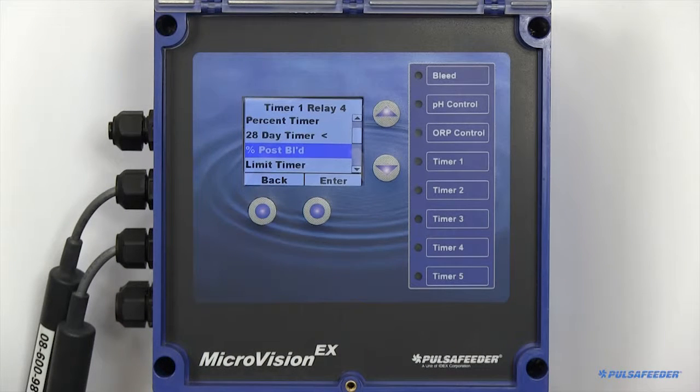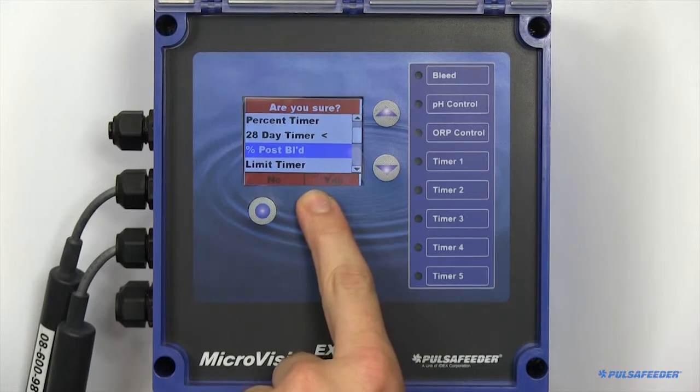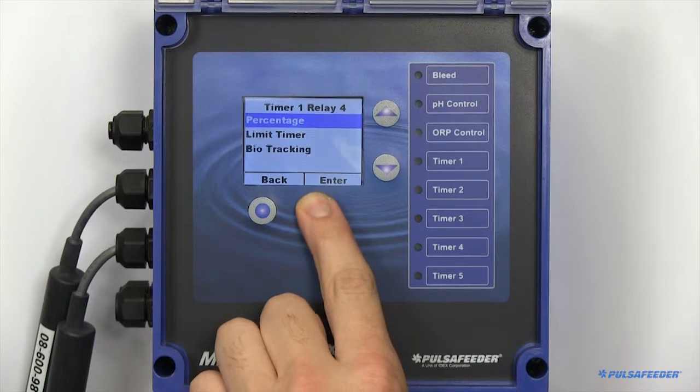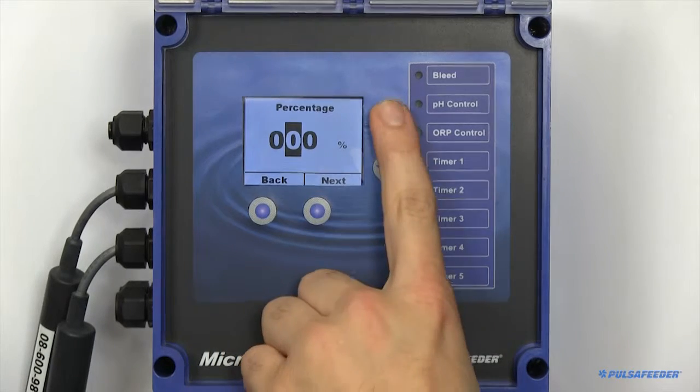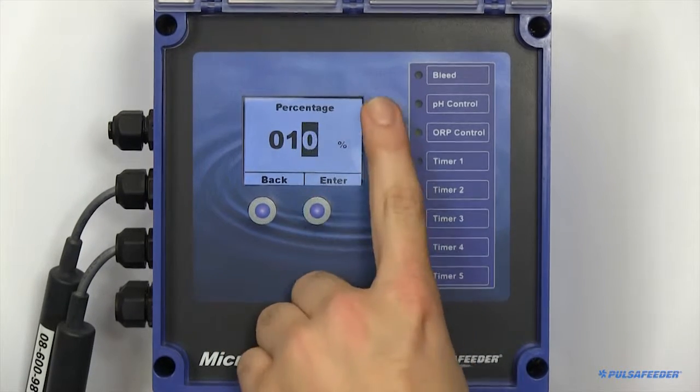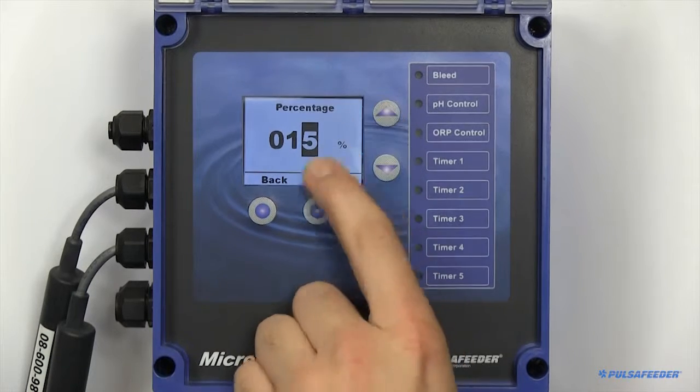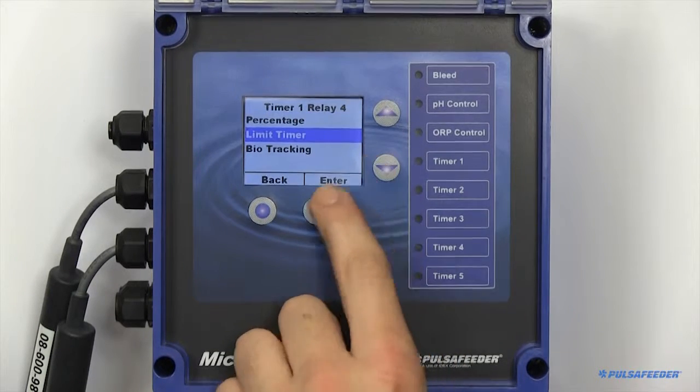Percent Post Bleed keeps track of the time the bleed relay is turned on. When that bleed shuts off, it will then bleed for the specified percentage. The timer also includes a limit timer to prevent overfeeding.